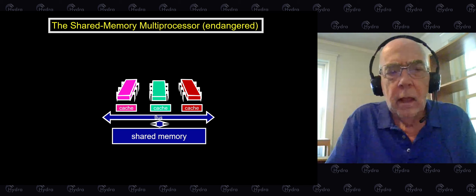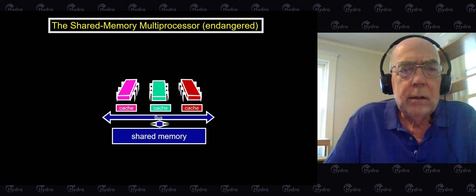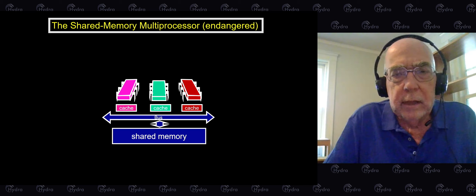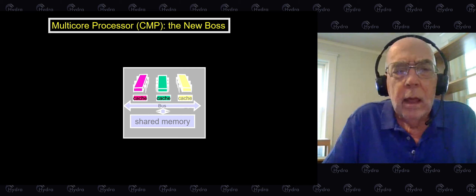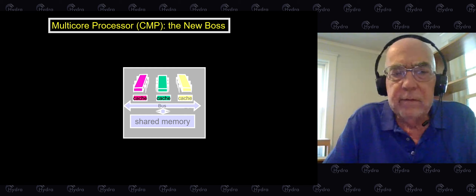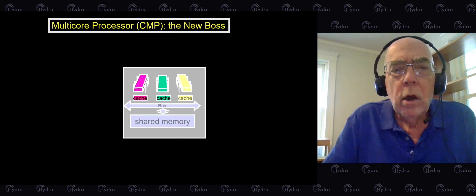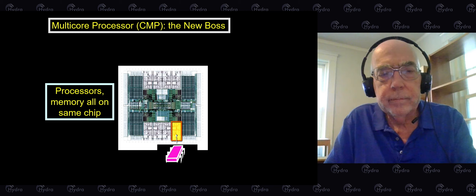After people discovered concurrency, they built things called shared memory multiprocessors, which don't really exist anymore either. Today's processors are what are called multicore processors, sometimes called CMP, meaning that the processors, cache, and communication medium are all put together on a single piece of silicon. In real life, each of those rectangles is a processor, and everything else is caches and memory — all on the same chip.